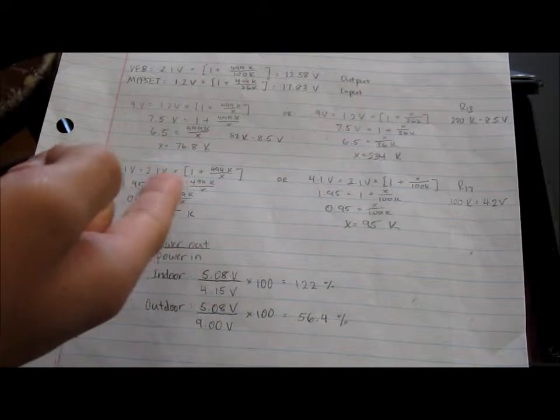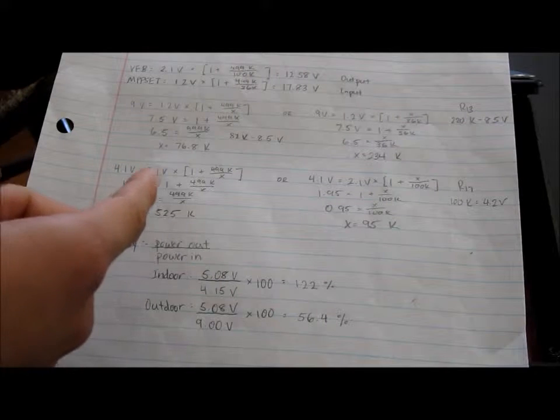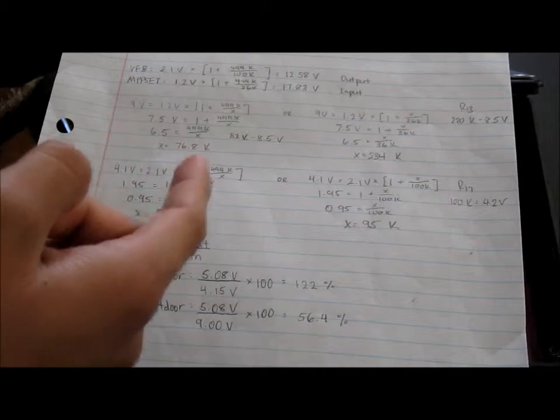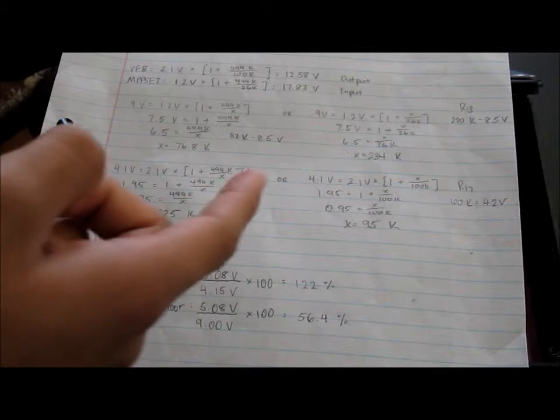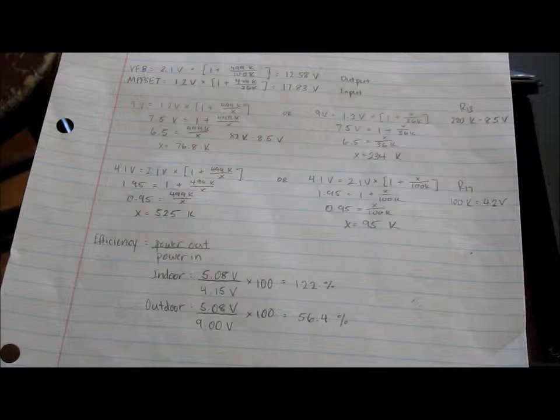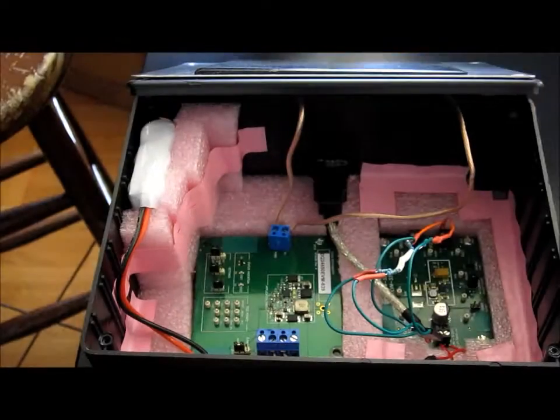And for the same thing for the input volts, I used a different equation: 2.1 volts times 1 plus 499k over X. I solved for a 100 kilohm resistor, and it was able to operate at an output of 4.2 volts.